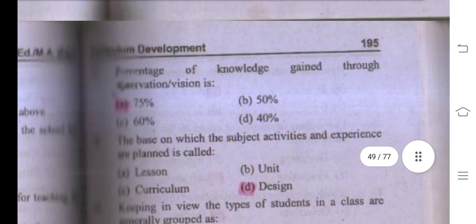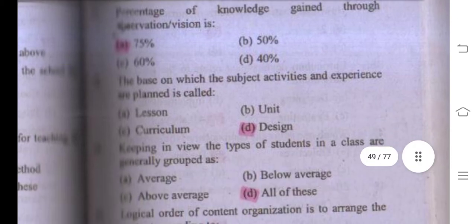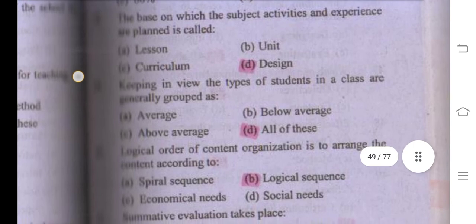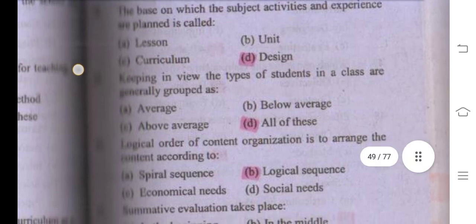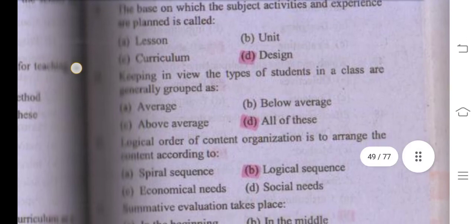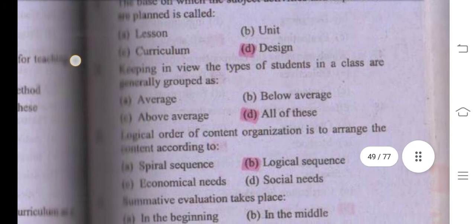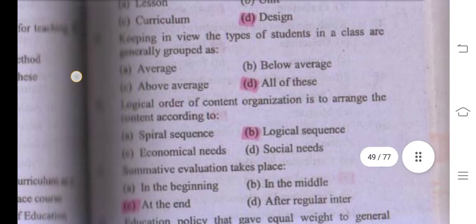The percentage of knowledge gained through observation is 75%. The base on which subjects, activities, and experiences are planned is called design. Keeping in view the types of students in a class, students are generally grouped as below-average, average, and above-average — the right answer is all of these.